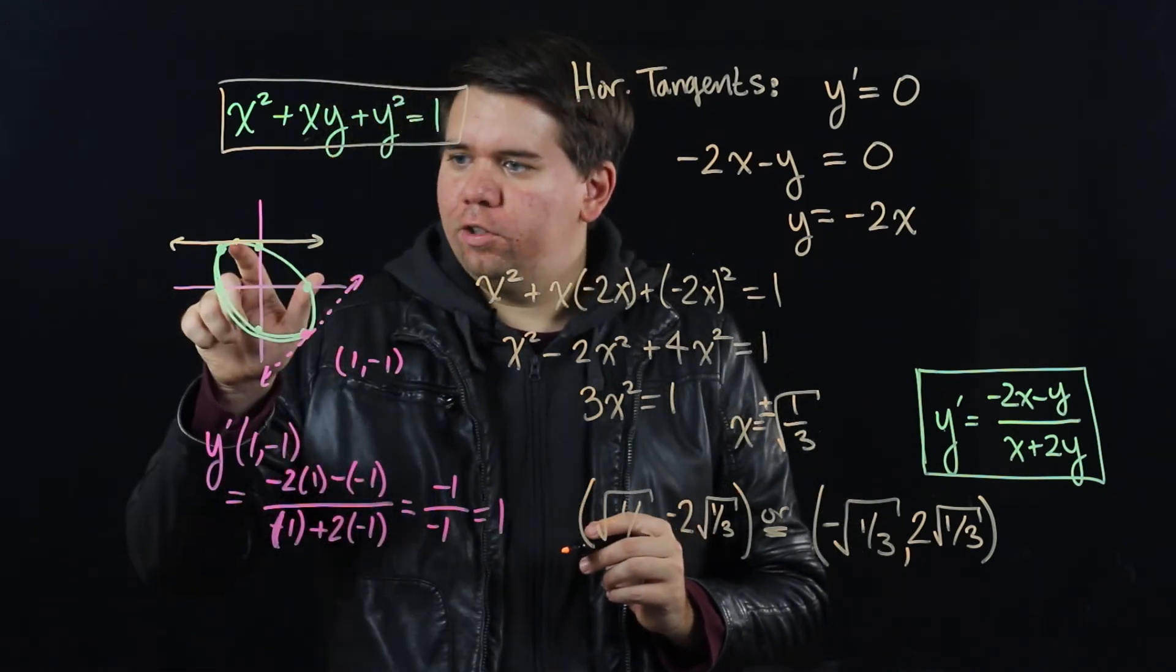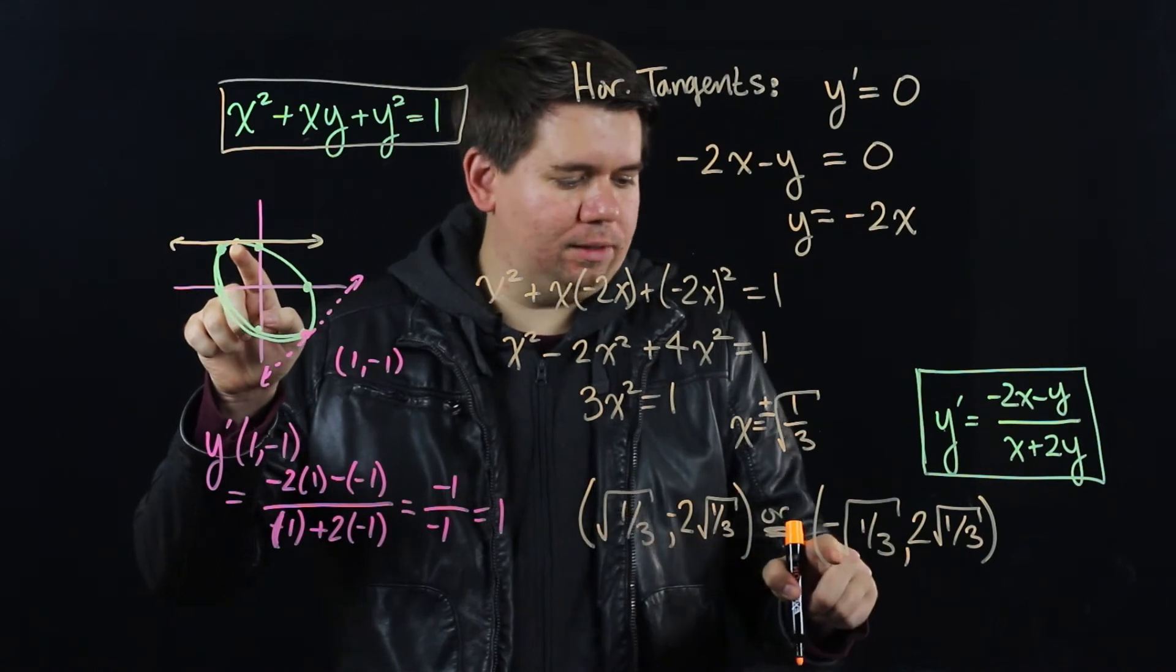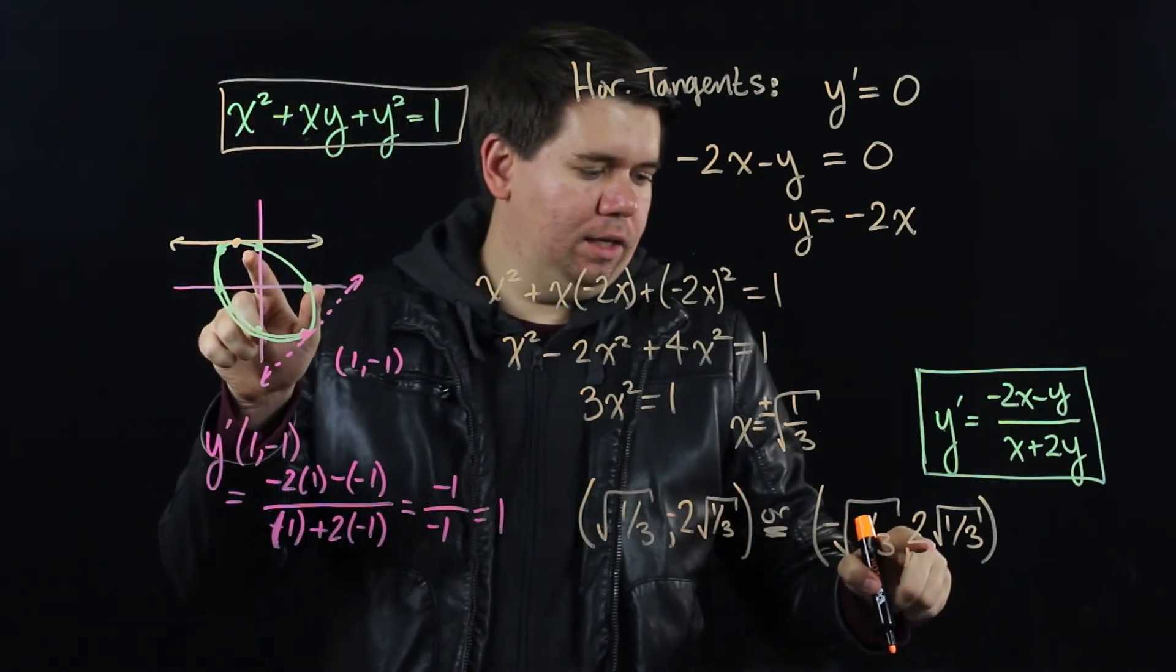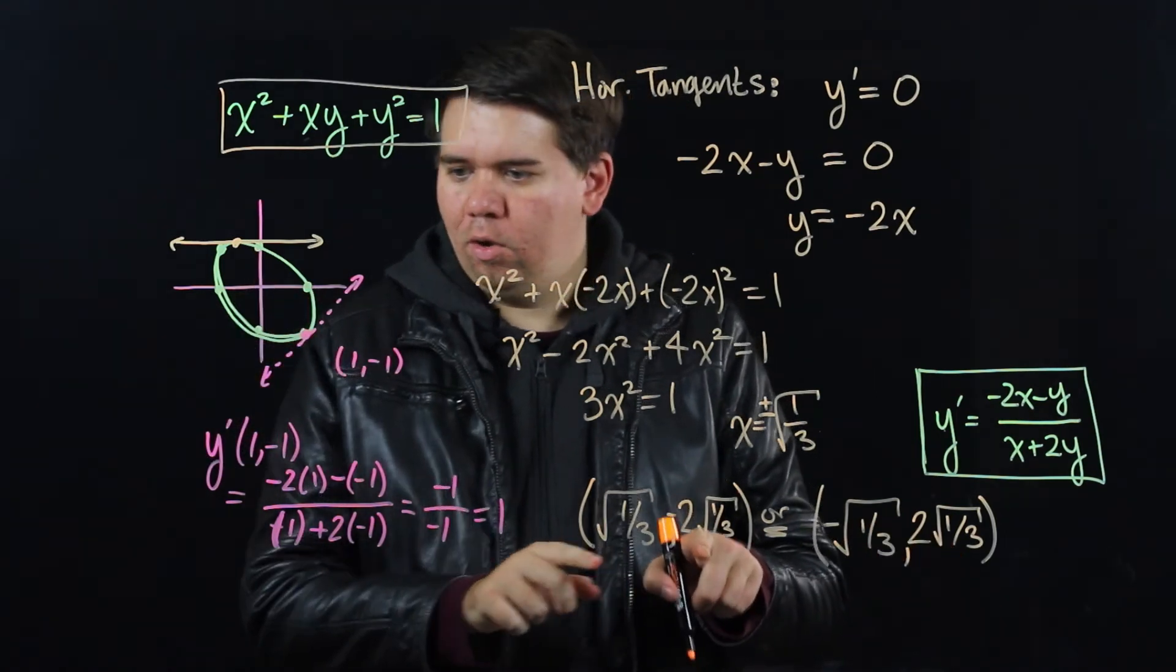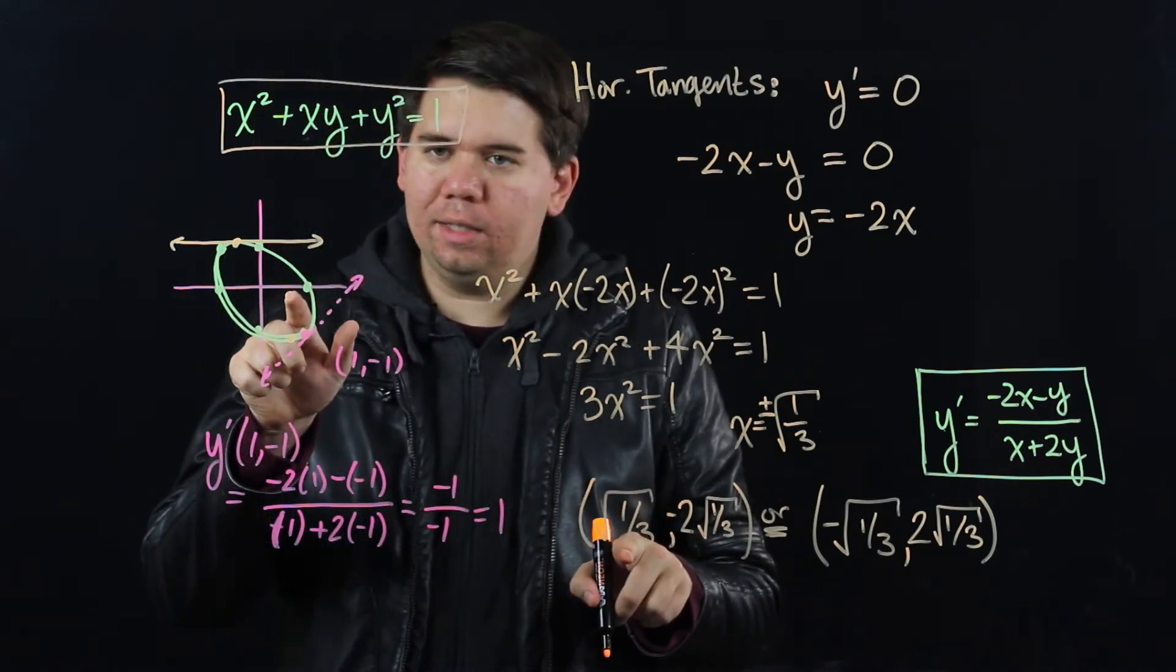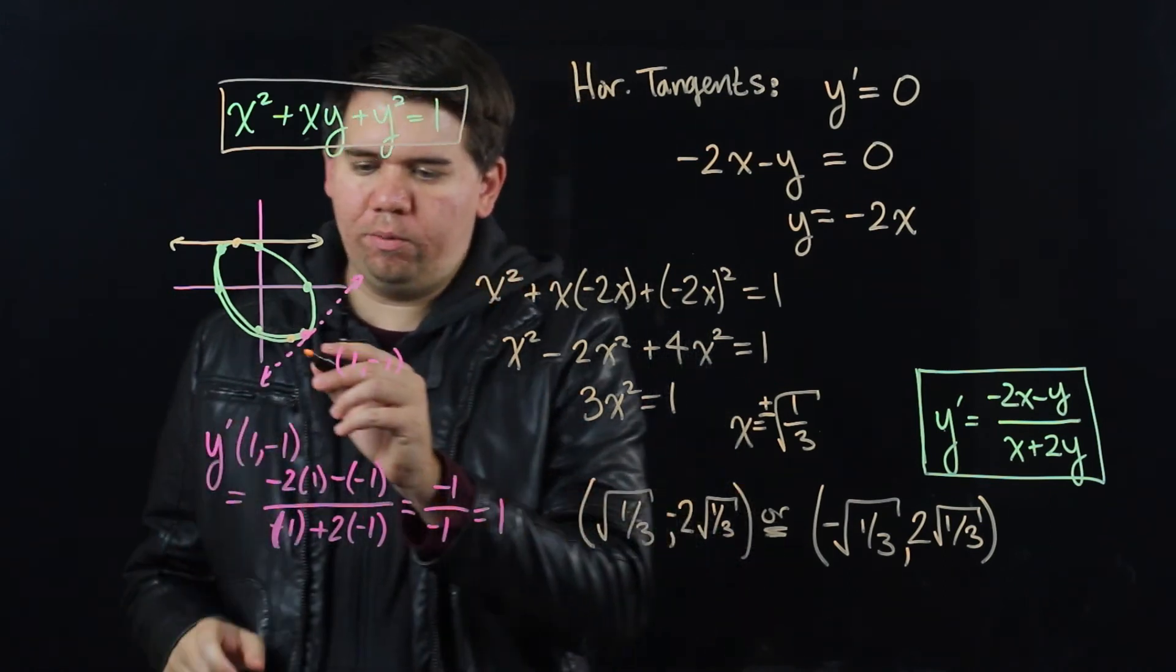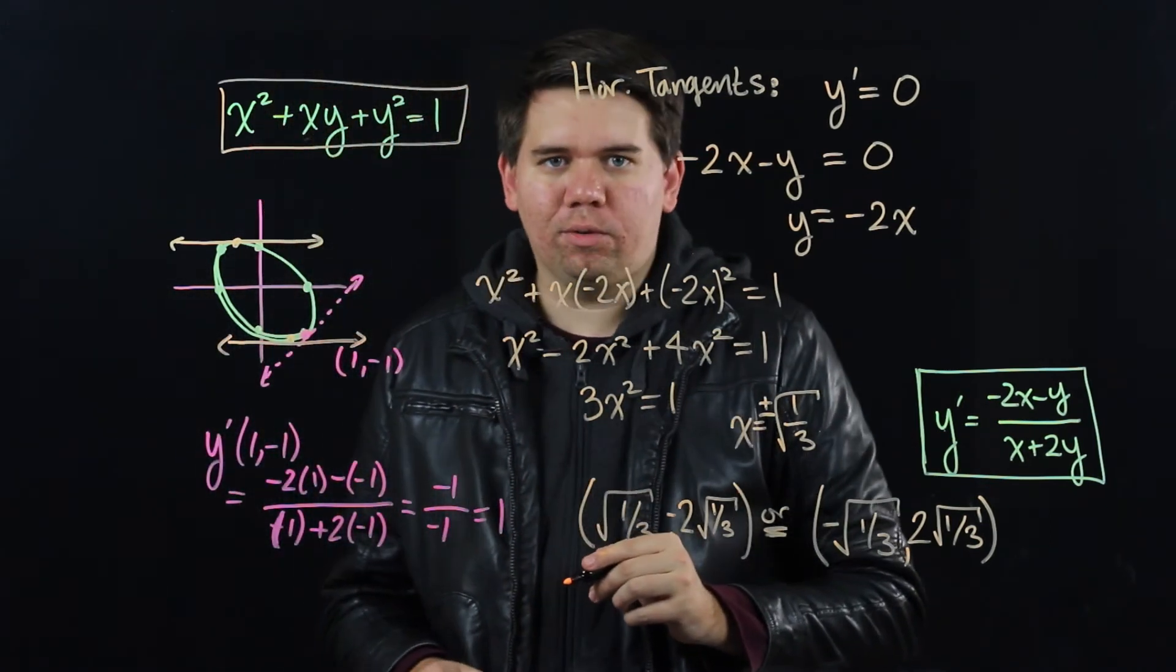If we go back to our graph, notice this point right here corresponds exactly to when x is minus square root of 1 third. And y is 2 times the square root of 1 third. How about this other point? Well, that would correspond right over here. Where x is positive square root of 1 third. And your y is negative 2 times the square root of 1 third. Giving you second point. Where the tangent is horizontal.